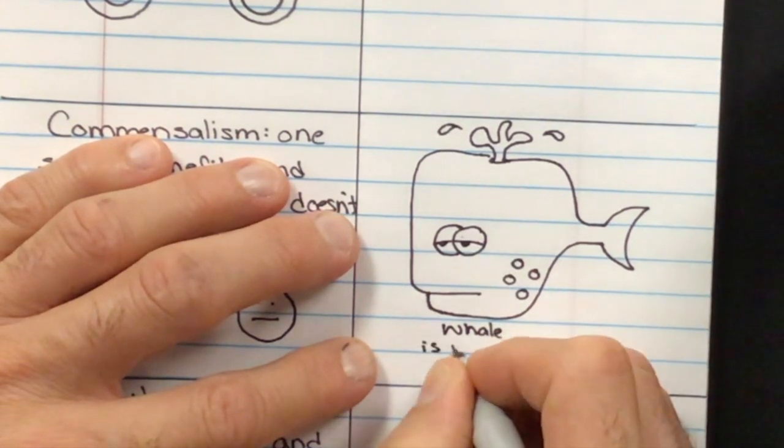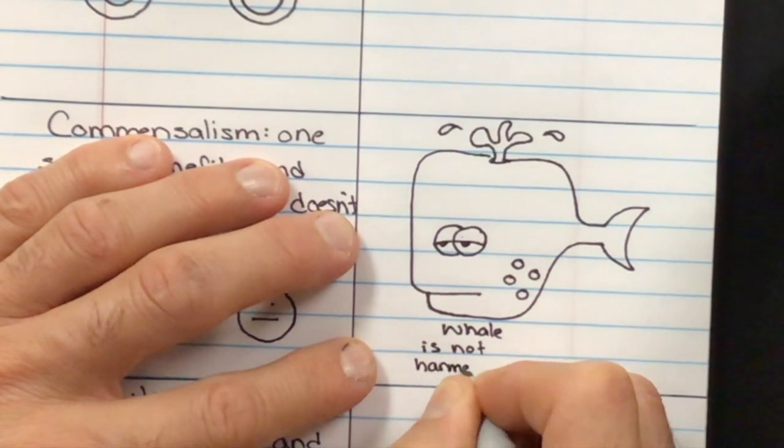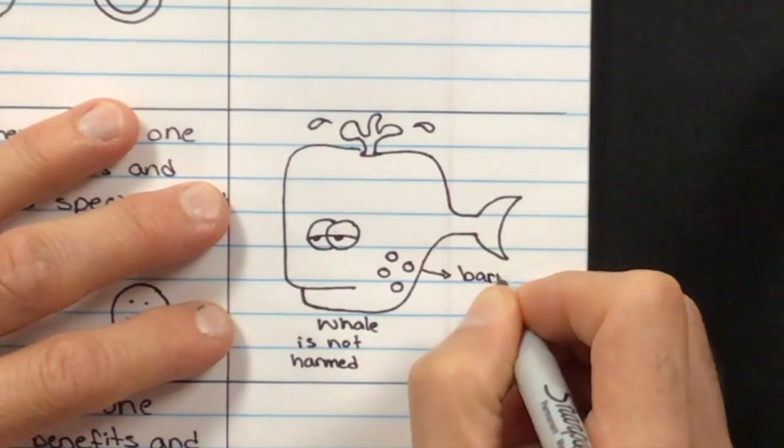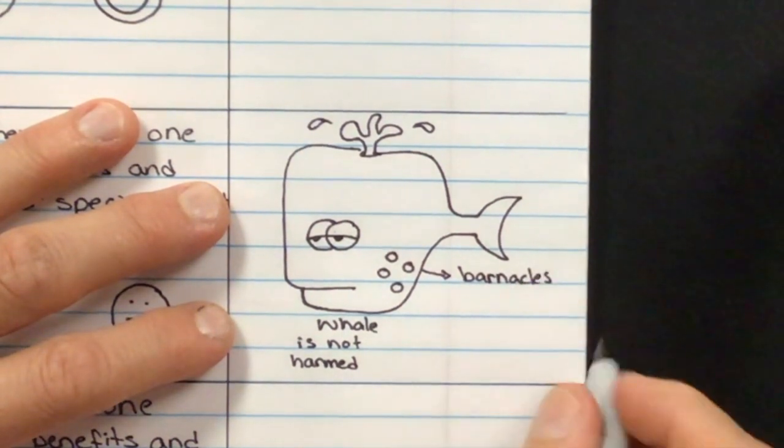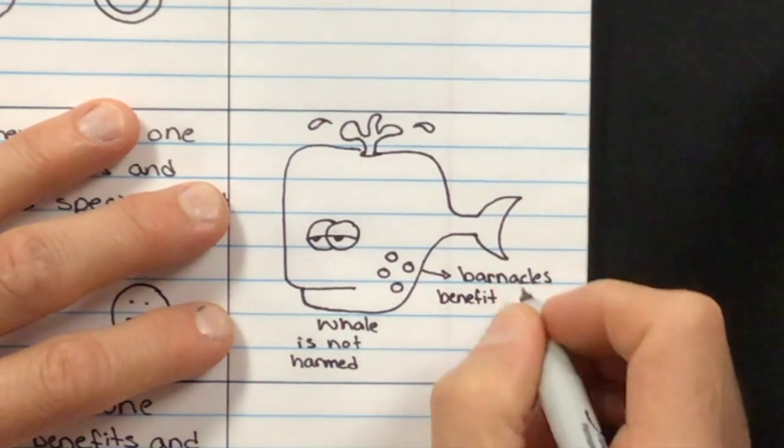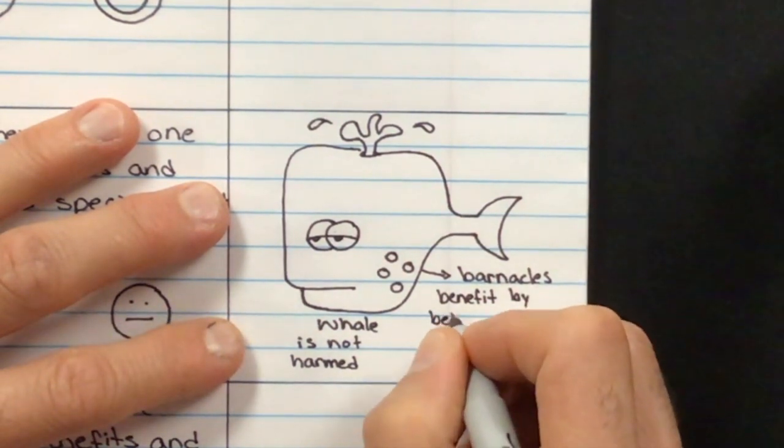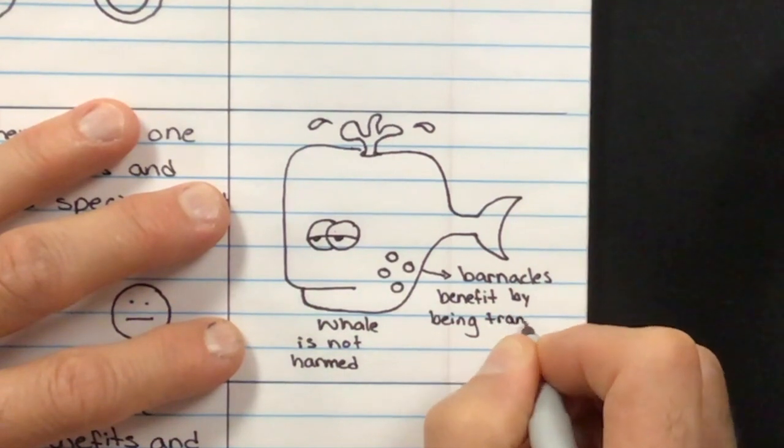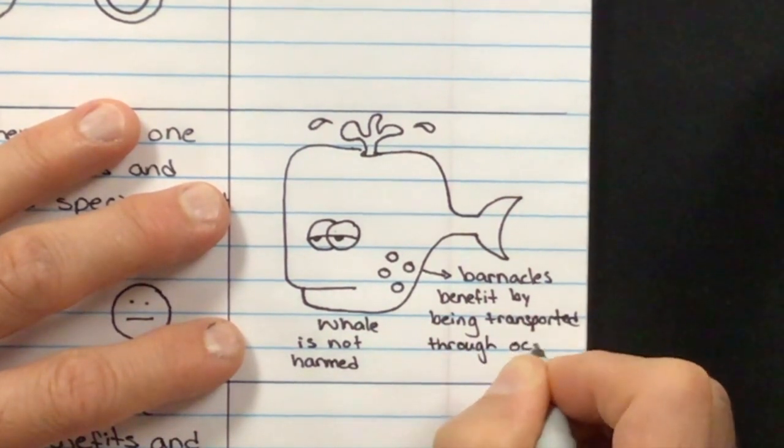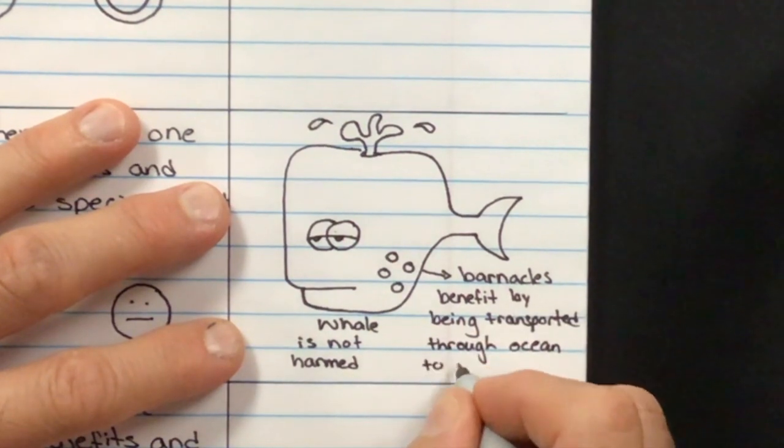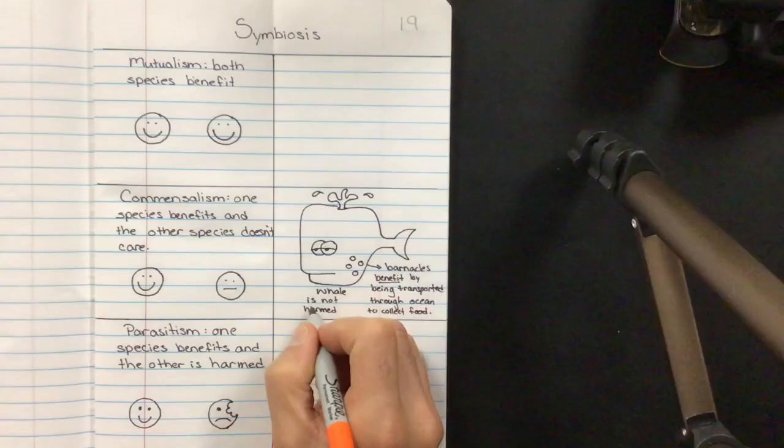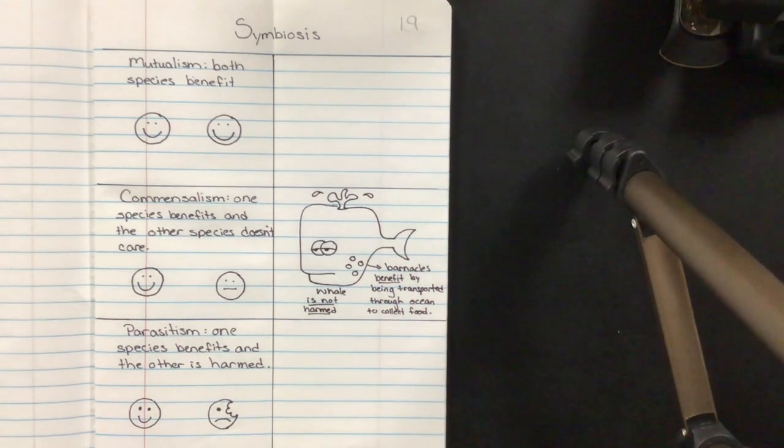It says, is not harmed. And then for over here, I'm going to say the barnacles. Barnacles benefit by being transported through ocean to collect food. So that's how these guys benefit. And that's how these guys do not care. It does not harm the whale in any way. So that's my example, whale and barnacles.